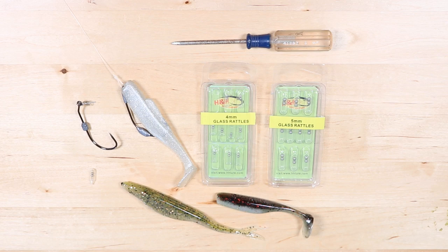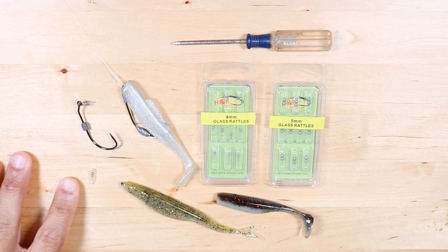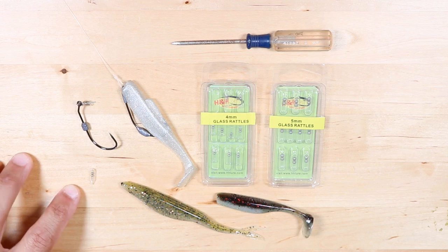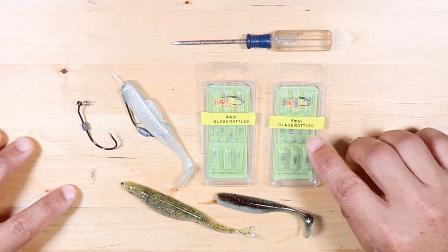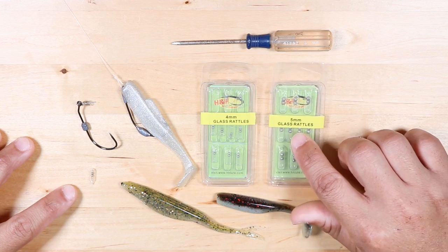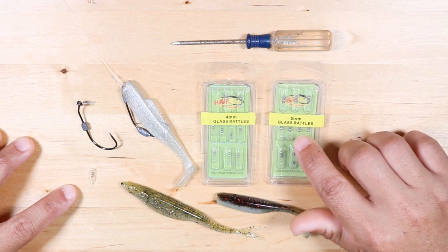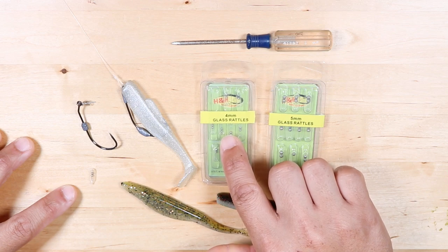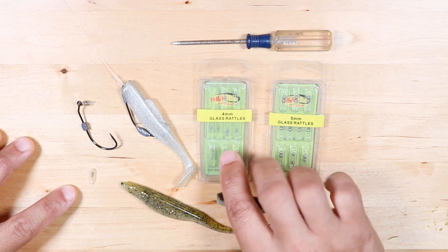They can't see very well so they have to rely on those other senses. When you add rattles to your soft plastics, you're increasing the chance of the fish finding your bait. These are some rattles that I picked up, made by H&H Lure Company. We have a 5 millimeter rattle here on the bigger side and then a 4 millimeter rattle which is a little smaller.